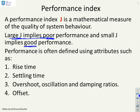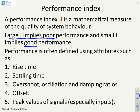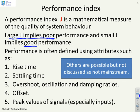Performance is often defined using attributes such as rise time, settling time, overshoot, oscillation and damping ratios, offset, peak values of signals, especially things like inputs. But we have a problem—there are other possible attributes you might use, but these attributes are not particularly easy to use because there's not a simple link between these attributes and the state feedback gain K.